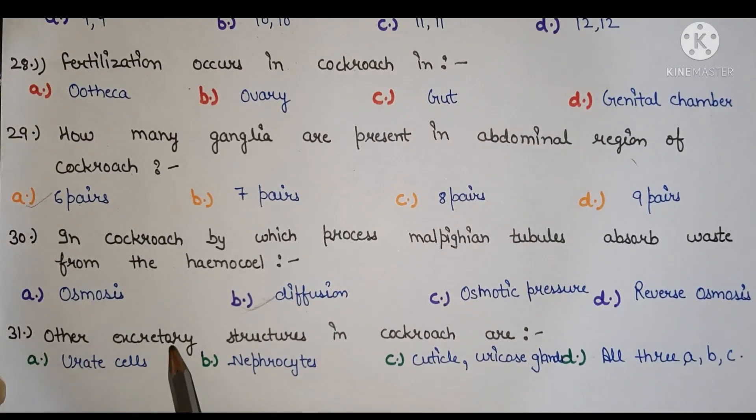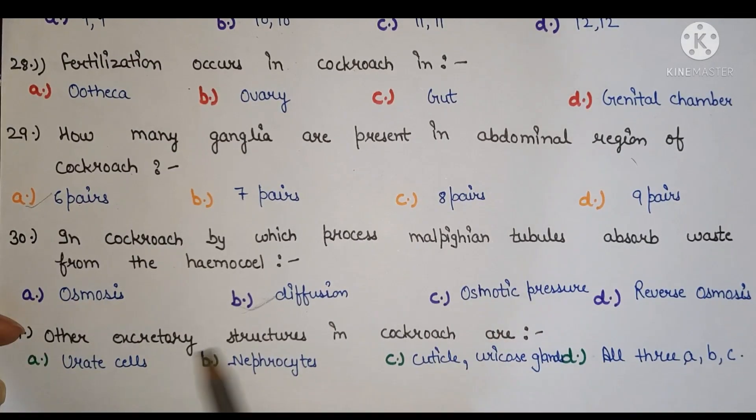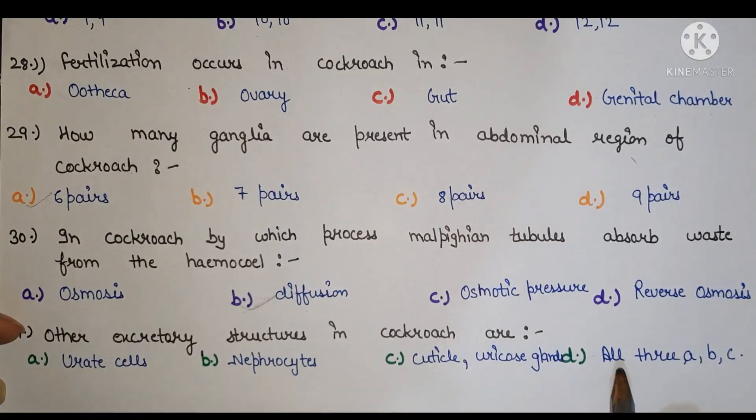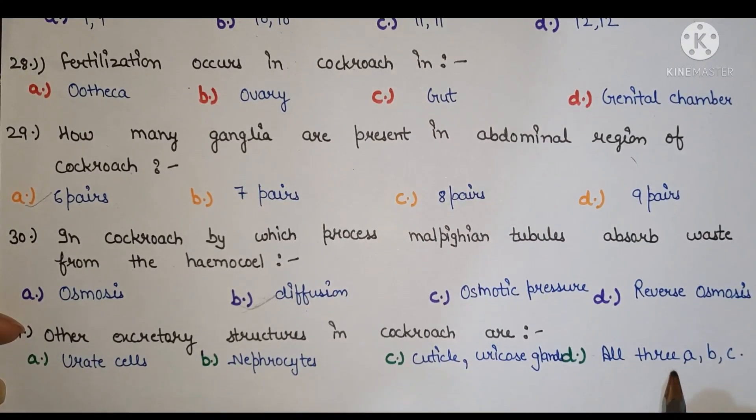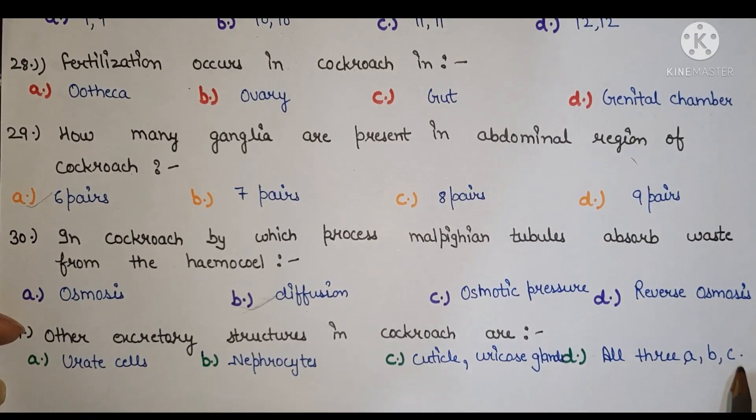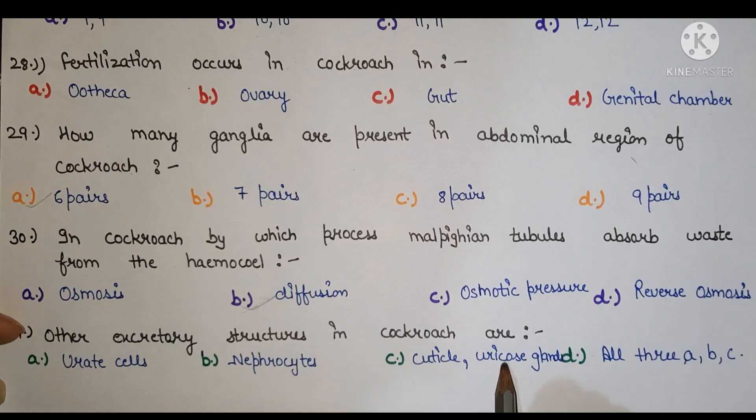Next, other excretory structures in cockroach are. Right answer is D, all three options A, B, and C: urate cells, nephrocytes, cuticle, and uricose glands.